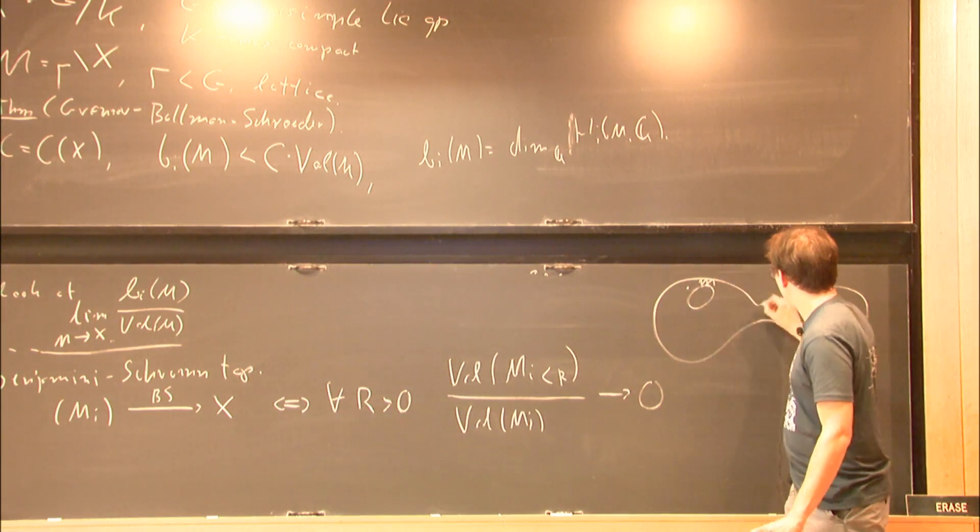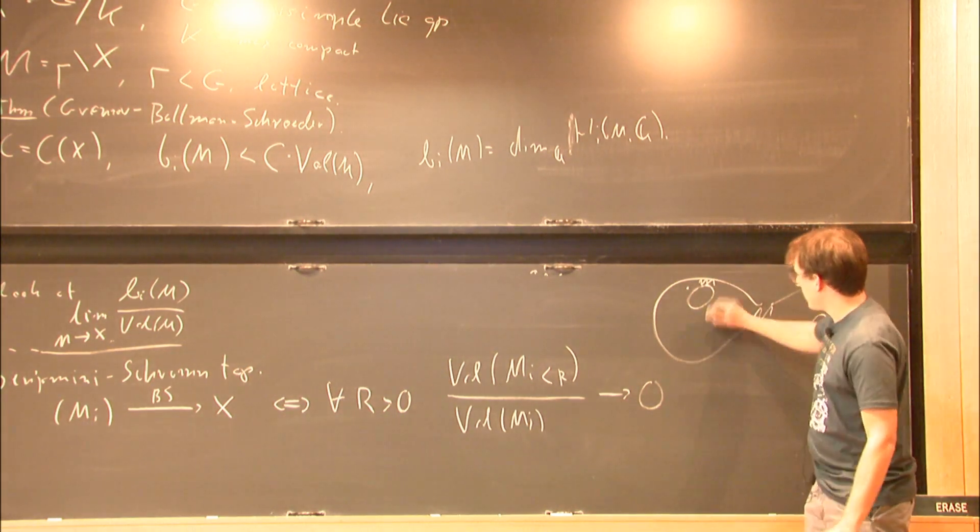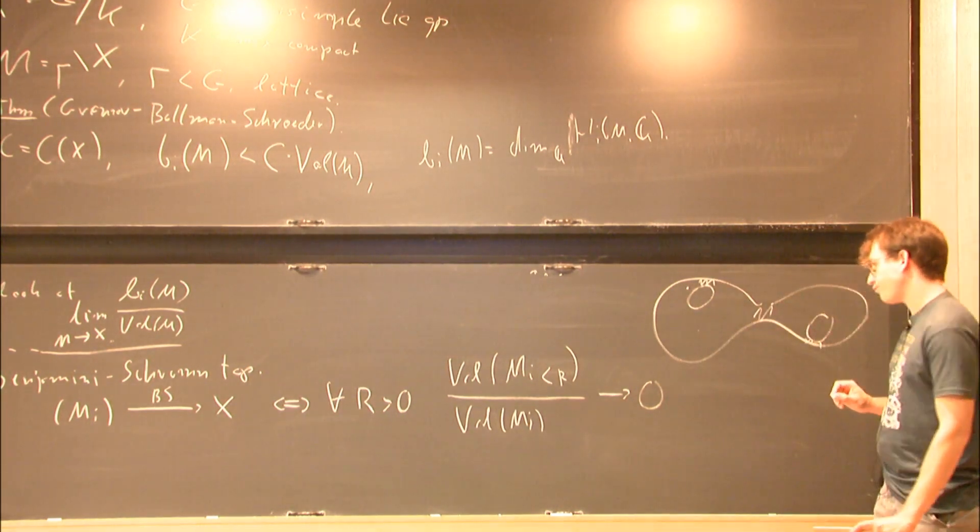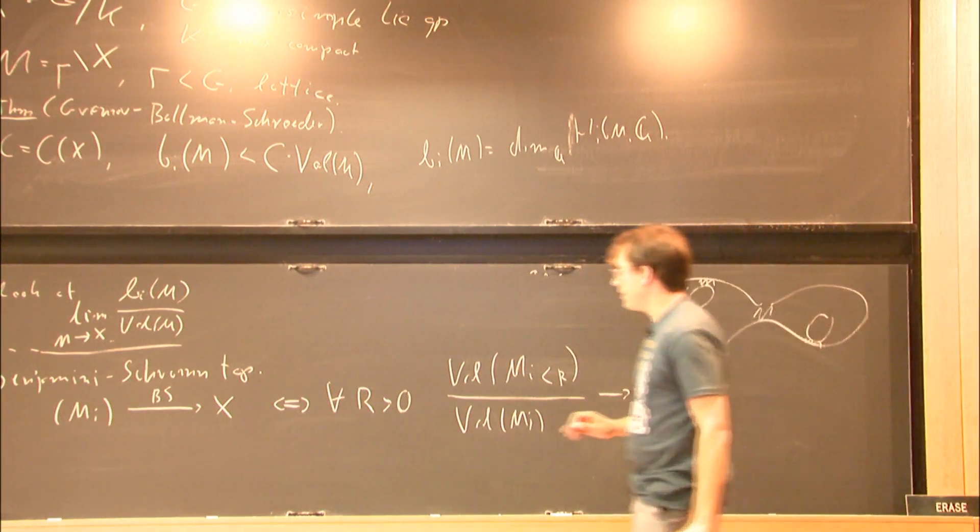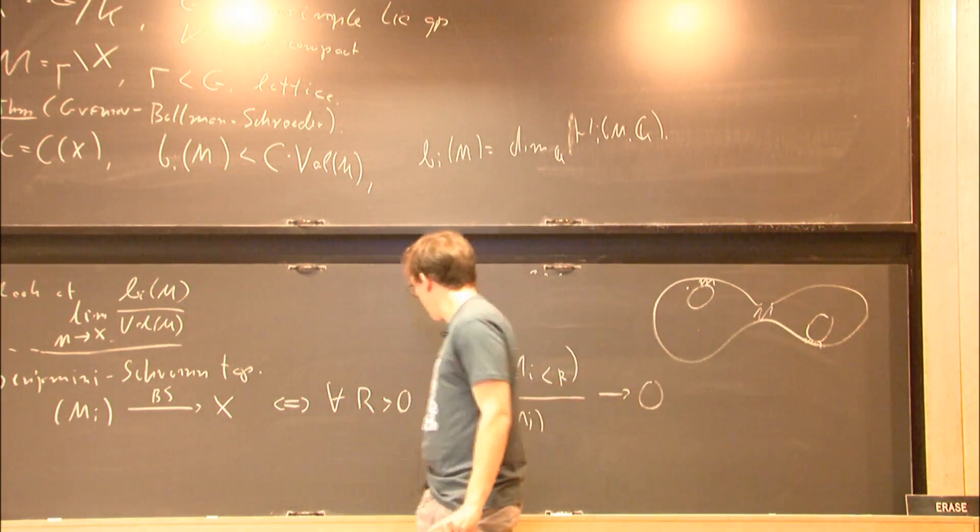Let's just draw a picture. Injectivity radius at a point of the manifold is the radius of the largest ball that lifts isometrically to the universal cover. So it will be very small here, and here, and here, but large, for example, here. And under this condition, it is true.